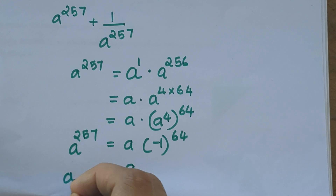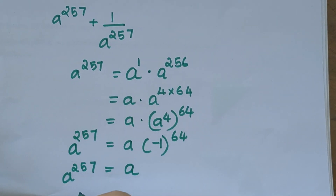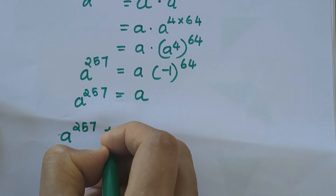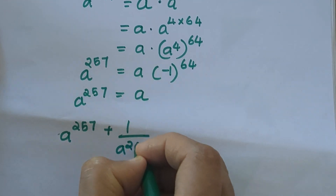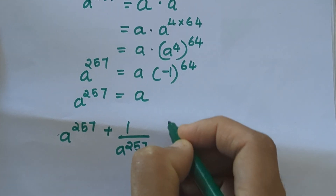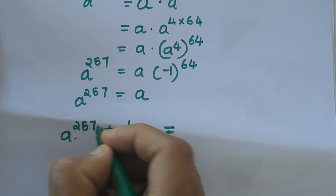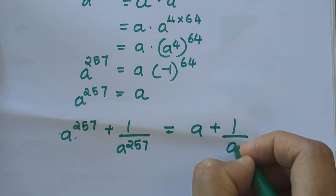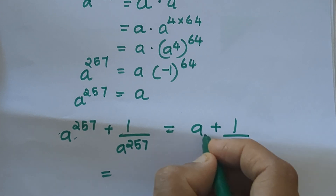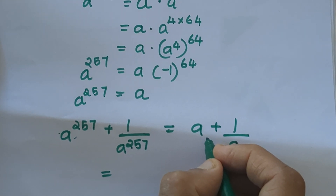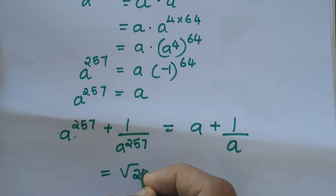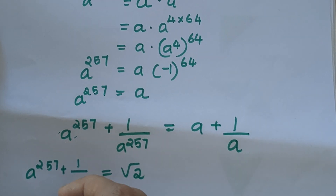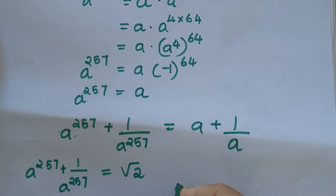So a raised to 257 equals a. Therefore a raised to 257 plus 1 by a raised to 257 equals a plus 1 by a. It is given in the question that a plus 1 by a is root 2, so the answer is root 2.